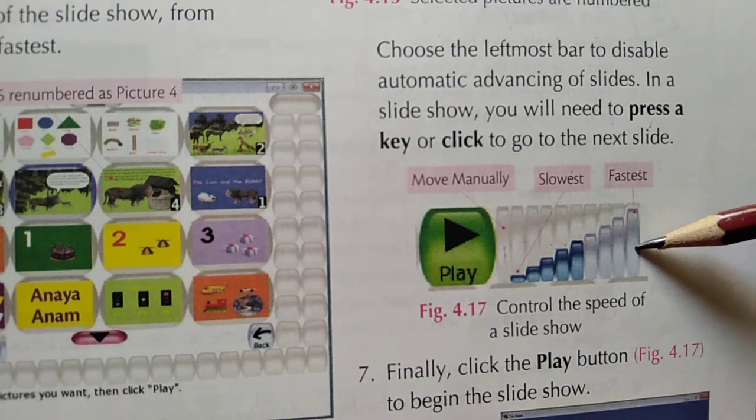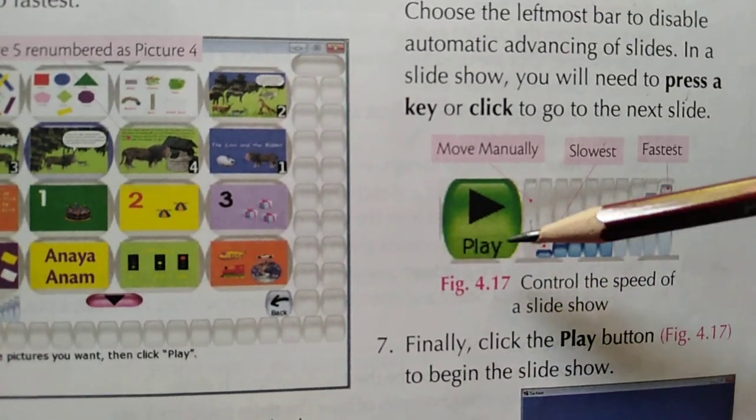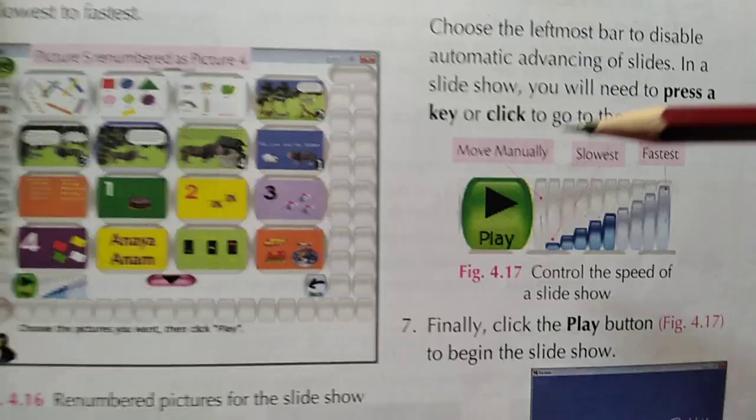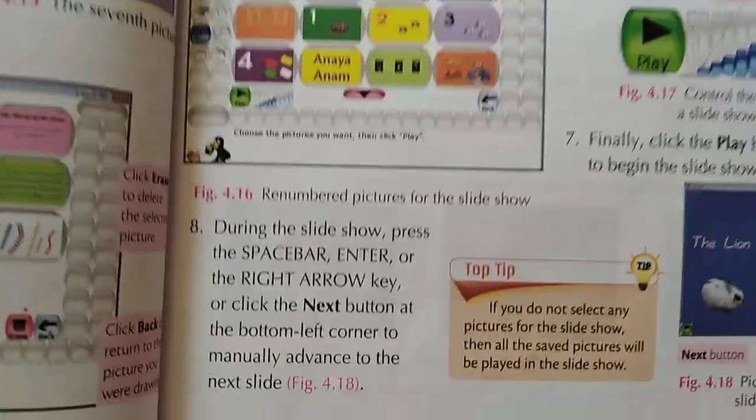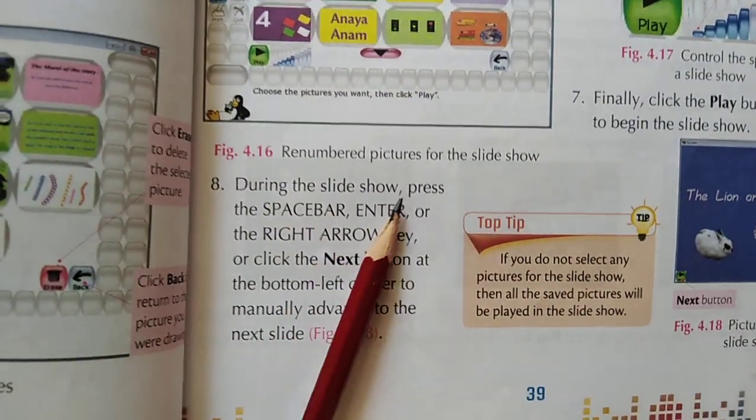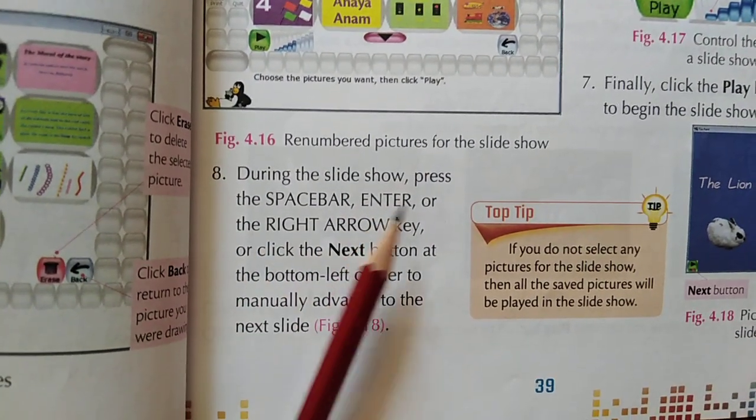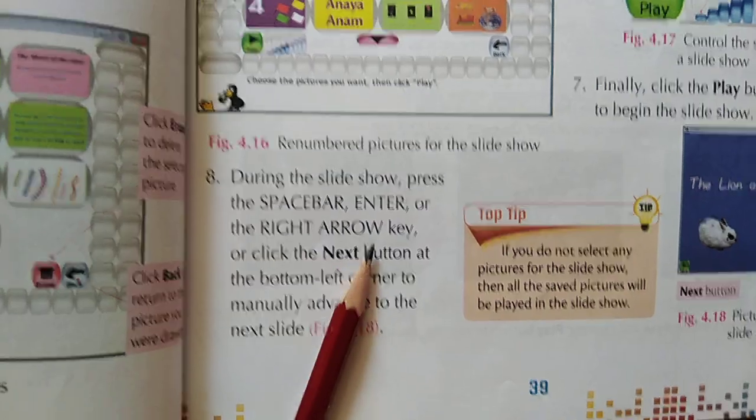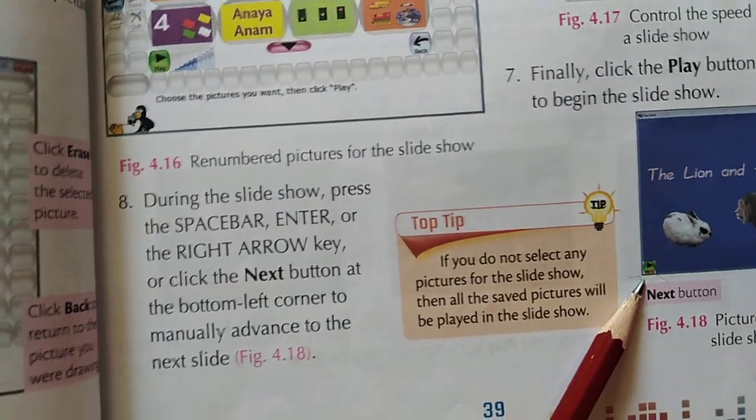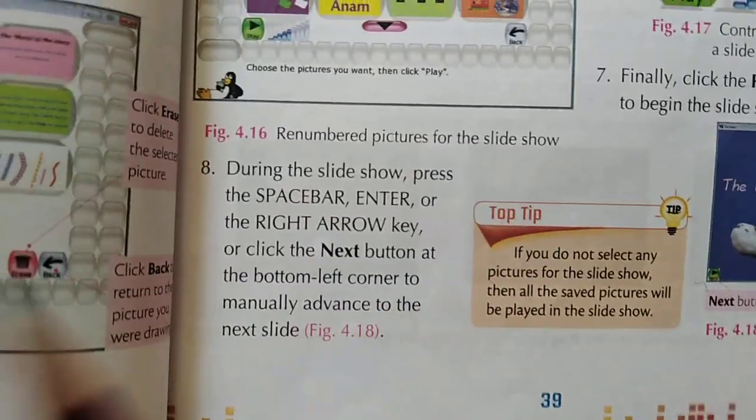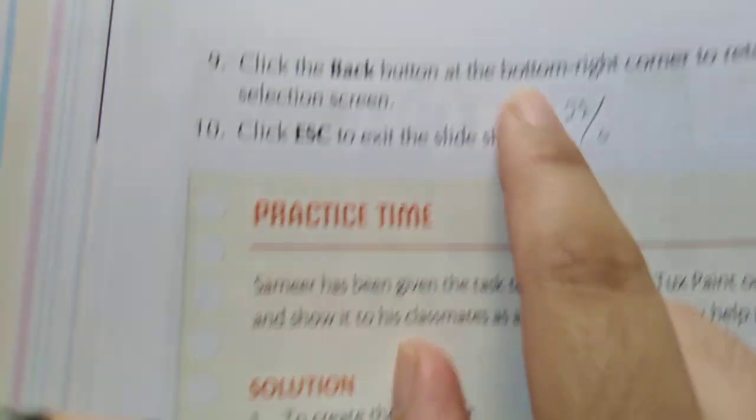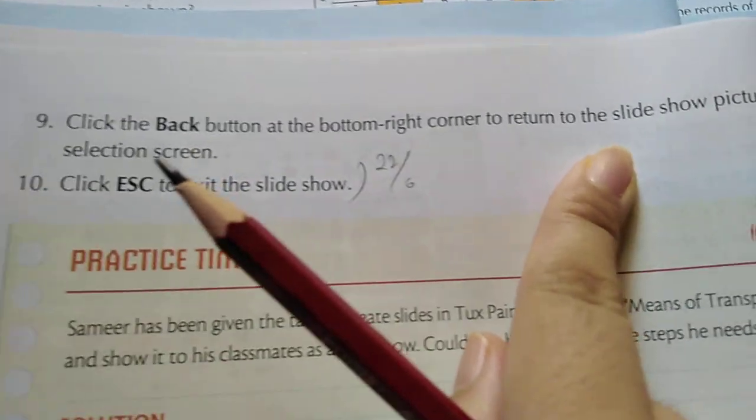Click on the Play button and it will play accordingly. During the slideshow when pictures are sliding, use the spacebar, Enter, or the right arrow key, or click the Next button. Here is the next button present. If you click on it, the next slide will be shown. If you press the Back button in the bottom right corner of the slideshow, you can see the back button in this picture.